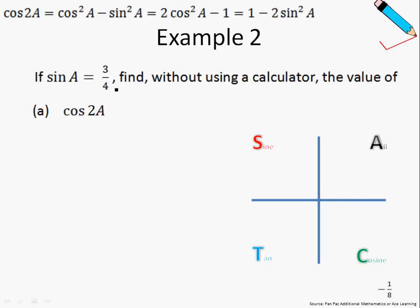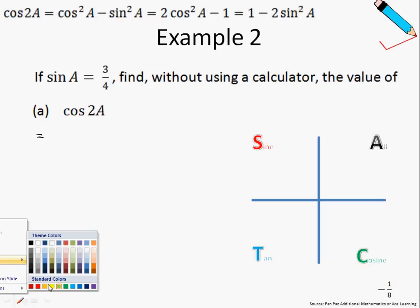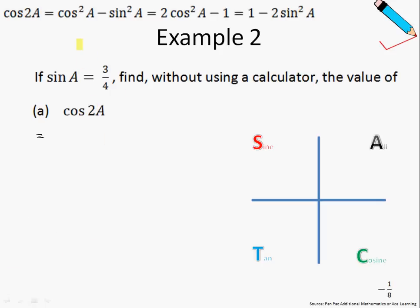Moving on, example number 2. If sine A is equal to 3/4, find, without using a calculator, the value of cosine 2A. Actually, if we make use of the correct form, or rather the more convenient form of this cosine 2A formula, it will be very easy to solve this simple expression. Recall that cosine 2A has three forms, and one of which is 1 minus 2 sine squared A, which is what I'm highlighting over here on the top of your screen.